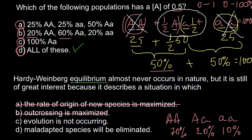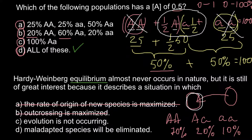Answer B — outcrossing is maximized — can also be crossed out. When we talk about outcrossing, we need two populations. Migration, such as pollen dispersal or physical migration of animals, can cause two gene pools with different allele frequencies to mix. This would change the allele frequencies of the population, so there should be no outcrossing. Therefore, 'outcrossing is maximized' is incorrect.